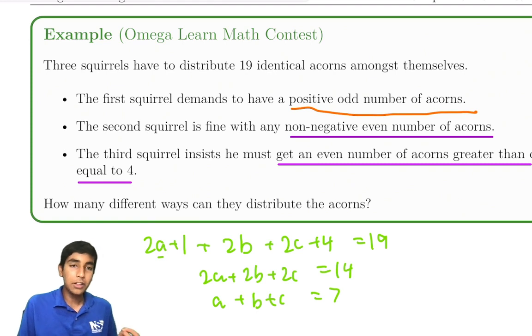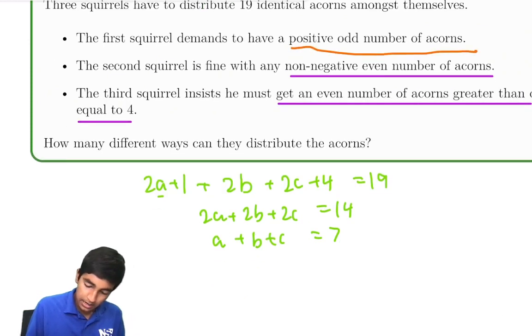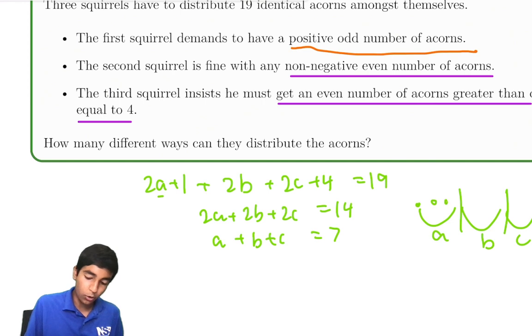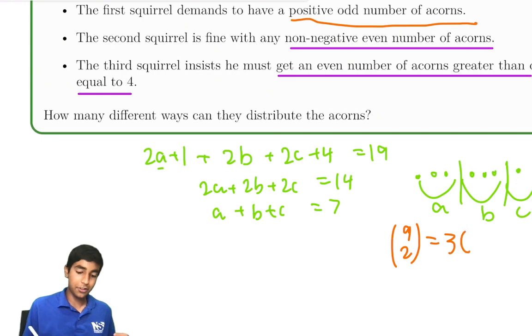How do we distribute that? Well, let's say a, b, c with 2 bars and 7 dots or acorns, or groups of 2 acorns in this case. So it's just going to be 9 choose 2. 9 spots, choose 2 bars. 9 choose 2 equals 36, the final answer for this problem.